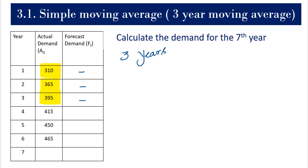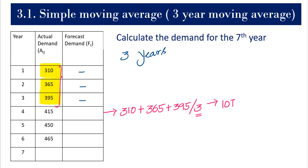For the fourth year: 310 plus 365 plus 395, divided by 3 because this is a three-year moving average. This gives us 1070 divided by 3, and the final forecast for year 4 is 357 units.